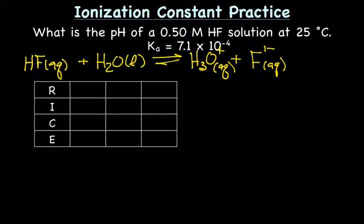And we can now use our ICE or RICE table. So R standing for reaction, I initial, C change, E equilibrium. So this is just like doing equilibrium problems. So let's put our reaction in. We get to ignore water because it's a liquid. So we're going to have HF and this is where our arrows would go. Going to our products, H3O+ and F-.